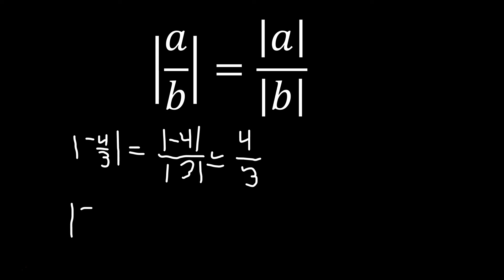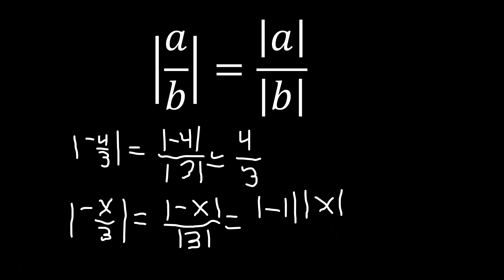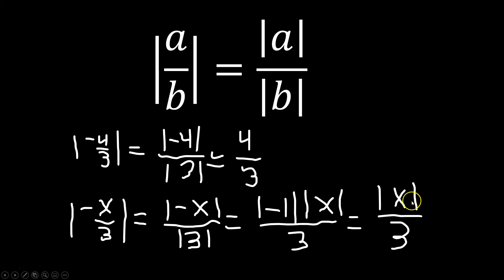Another example: absolute value of negative x over 3. Applying the rule, you separate them — absolute value of negative x divided by absolute value of positive 3. We've learned that negative x is like negative 1 times x, so we can distribute: absolute value of negative 1 times absolute value of x, divided by absolute value of 3, which is just positive 3. Absolute value of negative 1 is 1, so that leaves absolute value of x over 3.